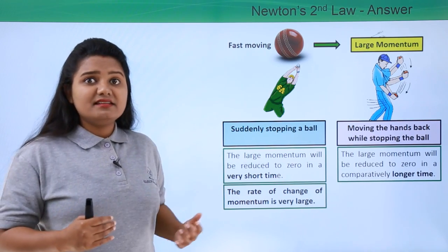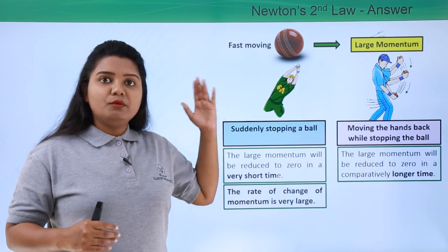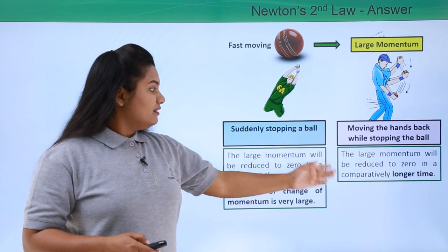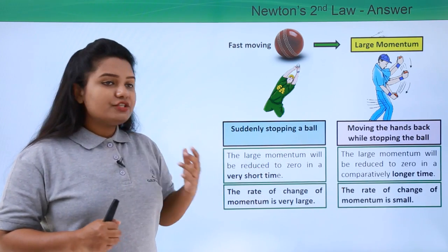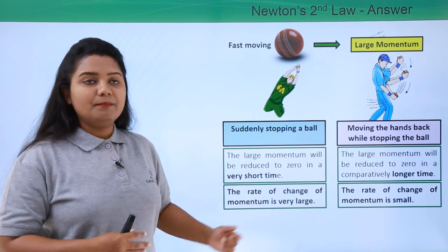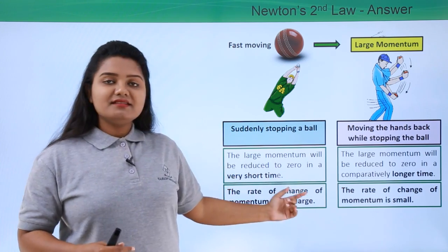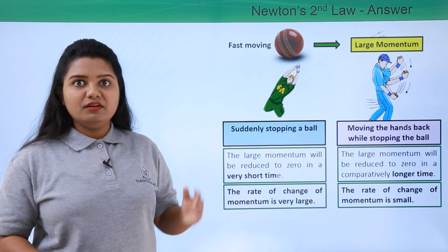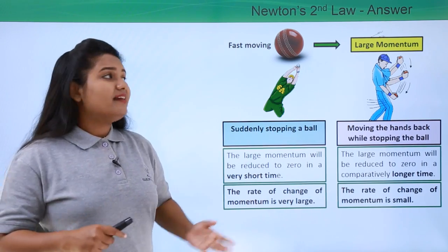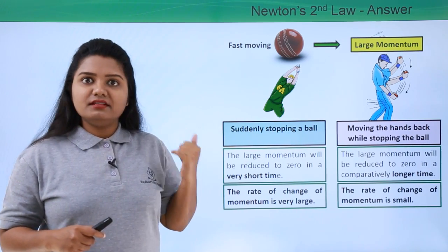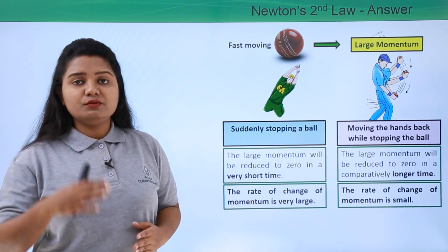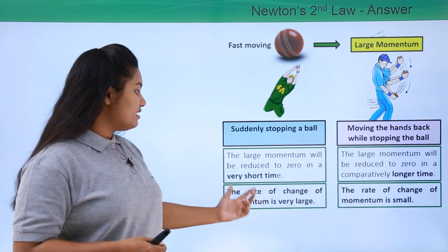The rate at which the momentum of the ball reduces to zero is very large in the sudden-stop case. But when the player moves his hands backwards, the rate of change of momentum is smaller because there is a longer time available. According to Newton's second law, the rate of change of momentum is directly proportional to the force exerted.